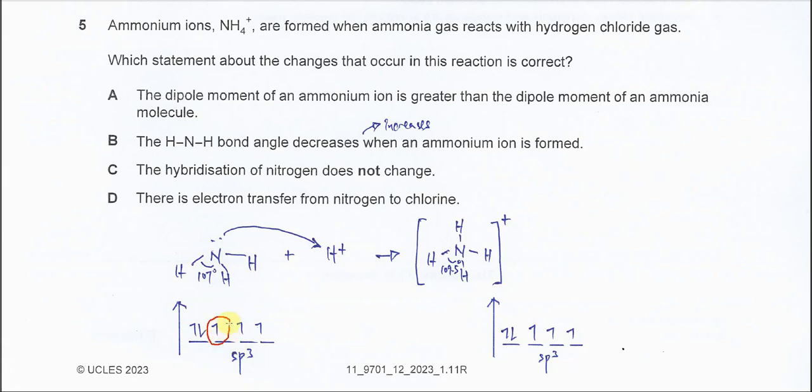The three unpaired electrons here will be used to form the three sigma bonds with the hydrogen. And the lone pair here is also in the hybrid orbitals.